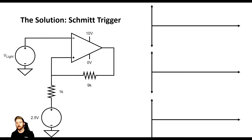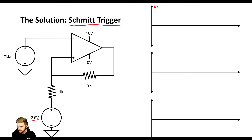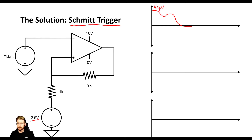Some really smart people figured out a way to fix this. The problem is that we have a noisy input and that translates to noise on our output, which we don't want. The way we can fix this is using something called a Schmitt trigger — it's just a different version of a comparator. We still have our same 2.5-volt reference, except now we have a couple of resistors: a 1K and a 9K resistor, and they're going to allow us to do something pretty cool.